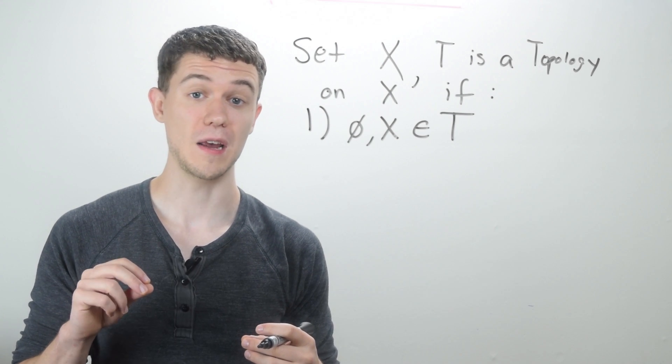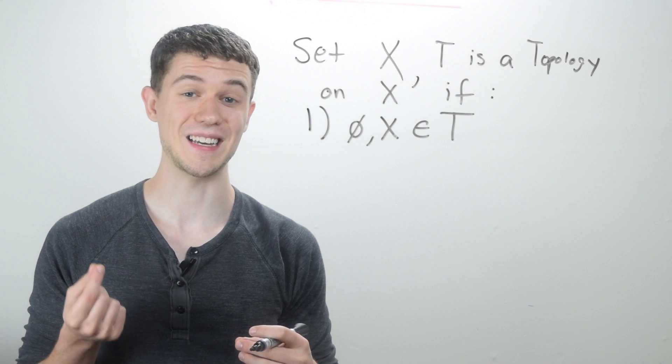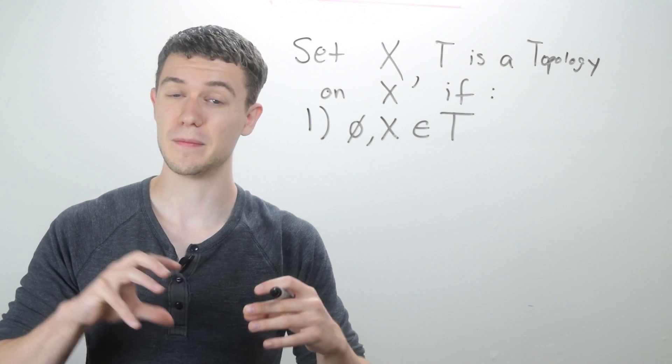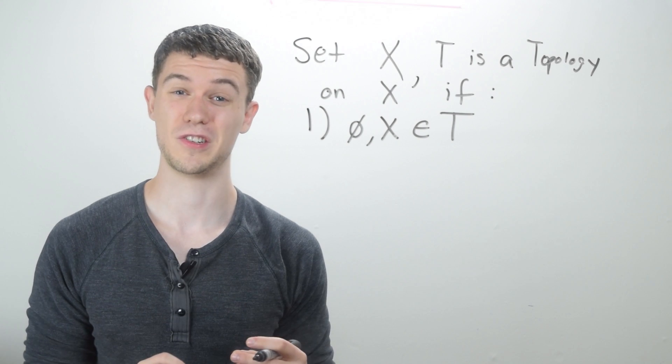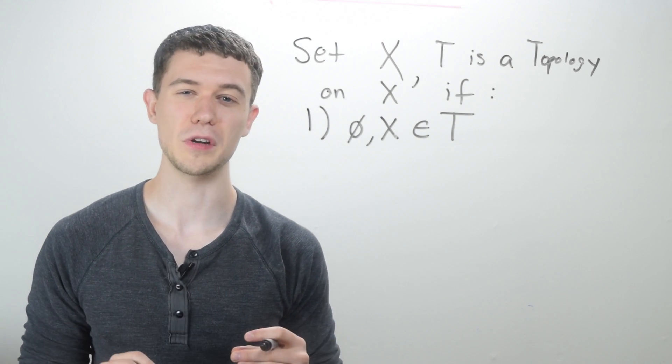Now actually, if these are the only things in the topology, that is actually a topology itself. It's called the indiscrete topology, but that's another video.